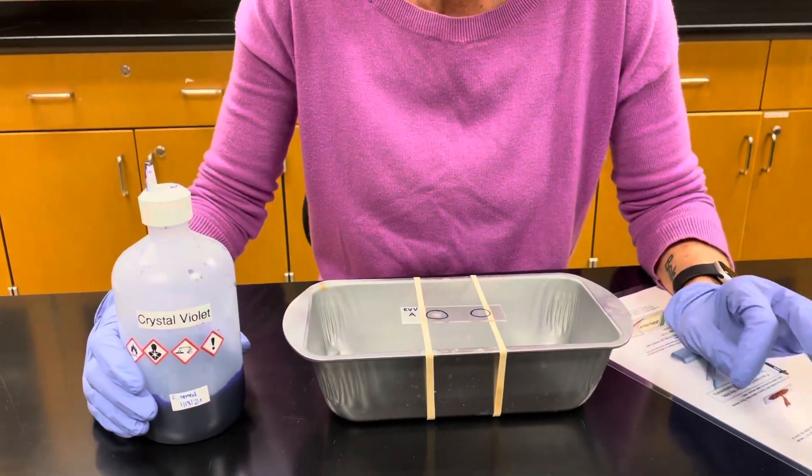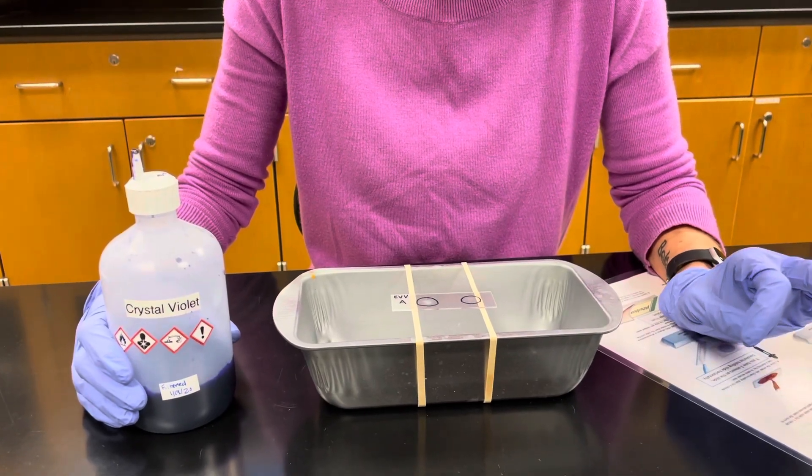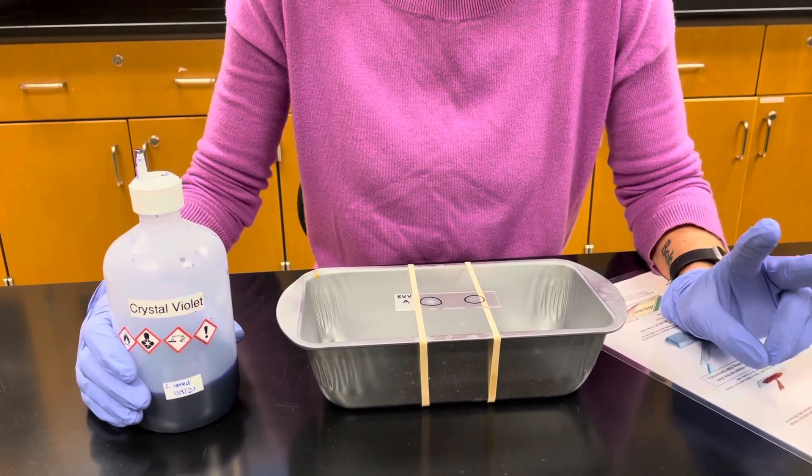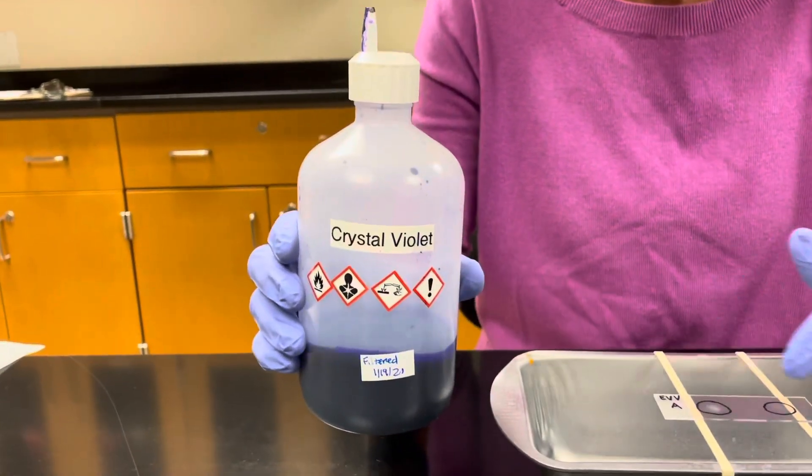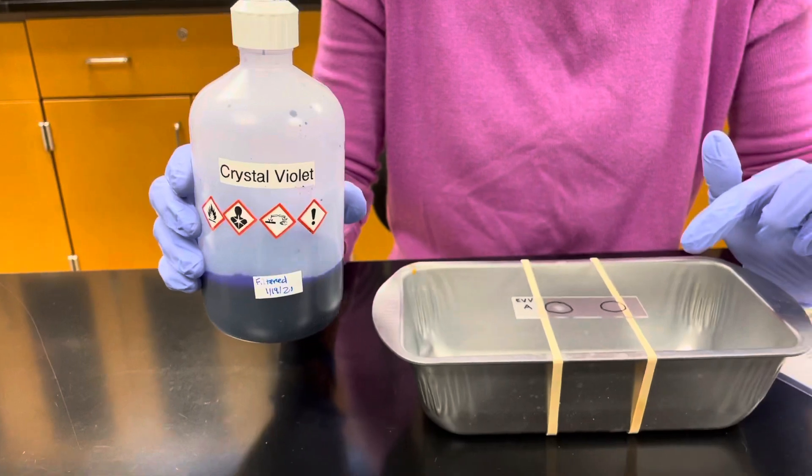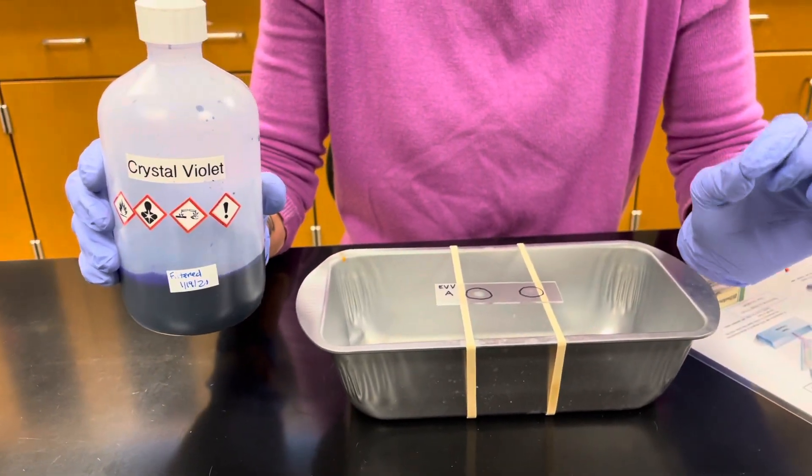The Gram stain is the most widely used differential stain. Two stains are going to be used. The first stain is called the primary stain and that's crystal violet. So we are going to flood our smears with crystal violet and allow it to sit for one minute.